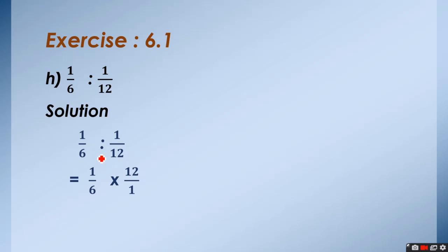I have repeated again. We change colon sign into the multiplication sign and reciprocal the second fraction. Then, we have ratio in a fraction form. So, 1 upon 6 multiplied by, 1 upon 12 becomes 12 upon 1 after reciprocal.